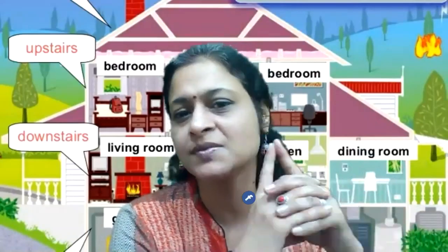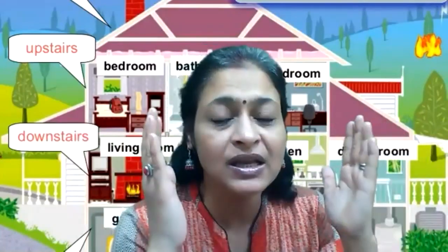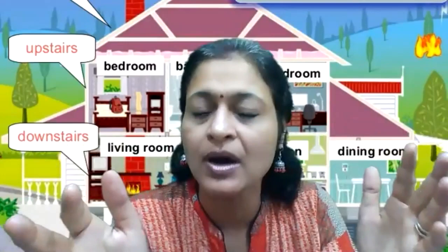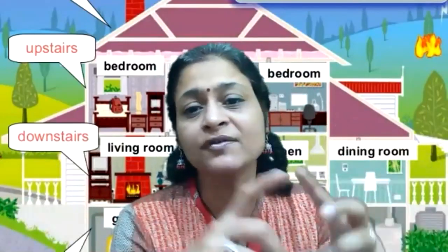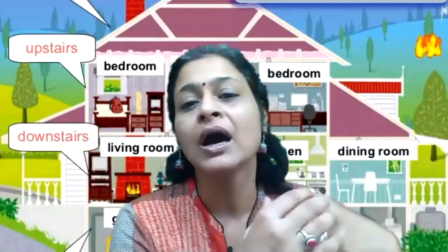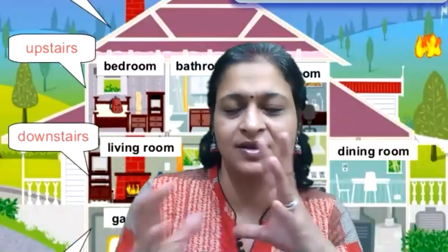Then why is it so happening? This is one thing that we need to understand. The Rashi chart that we have is the house in totality — it's our home. And the different Varga charts are the different types of rooms that we have in our home. We can have a study, a kitchen, washrooms, a living room, a bedroom, a drawing room. Similarly, the D1 chart is our home.